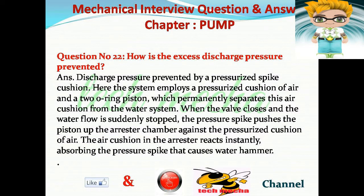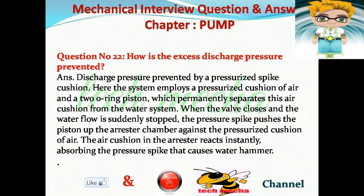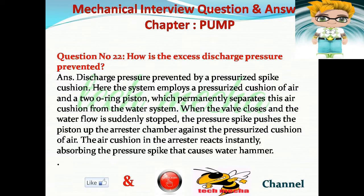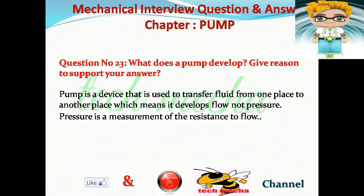Question number 22: How is excess discharge pressure prevented? Answer: Discharge pressure is prevented by a pressurized spike cushion. The system employs a pressurized cushion of air in a 2-O-ring piston, which permanently separates the air cushion from the water system. When the valve closes and the water flow is suddenly stopped, the pressure spike pushes the piston up the arrestor chamber.